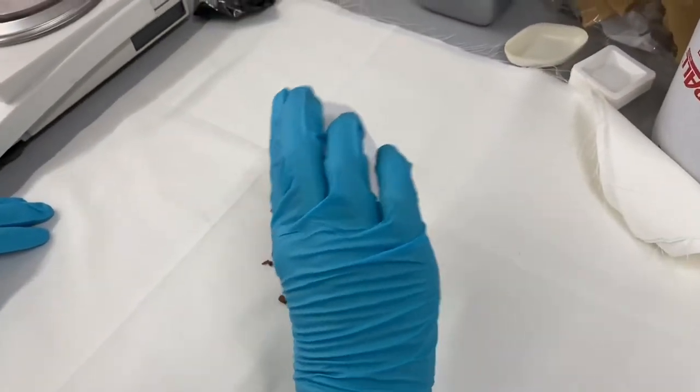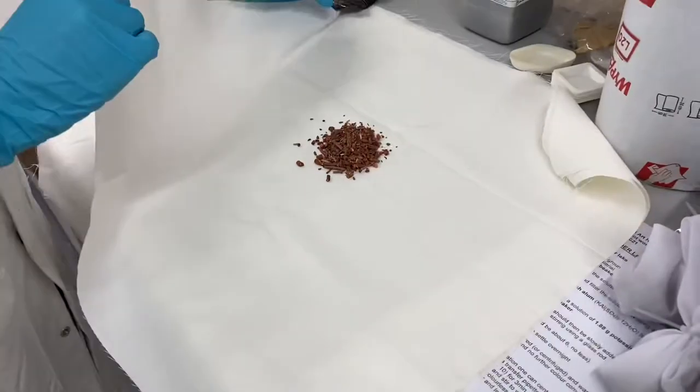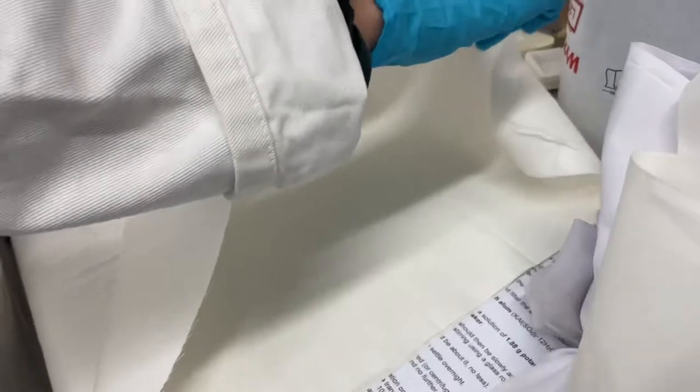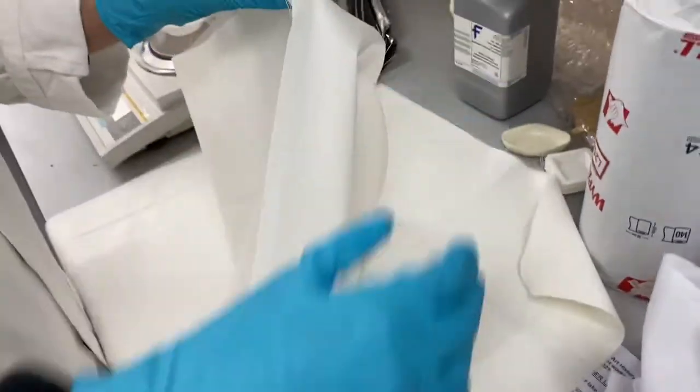These particular madder root fragments are from Turkey and we begin by putting 10 grams of the coarsely ground root in a netting bag so that we can soak it overnight in a beaker with water.